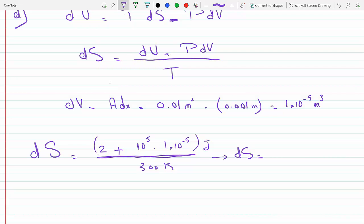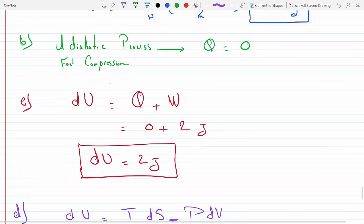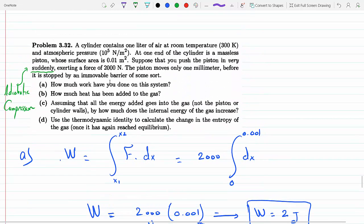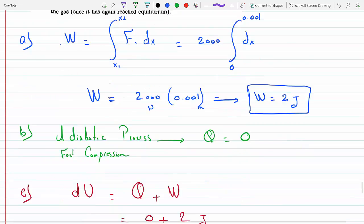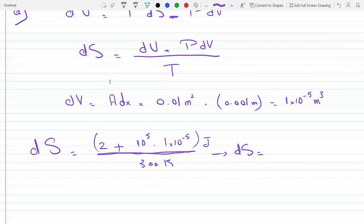Oh, one second - the change in volume is actually negative because we push the piston inwards. So the piston moves one millimeter - this is compression, so this would have to be minus. Because there's a minus sign here, so this is a minus. So we get the change in entropy to be 0.00333 joules per Kelvin. This concludes this problem.